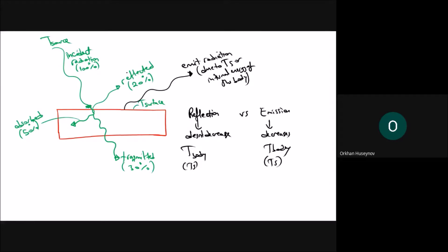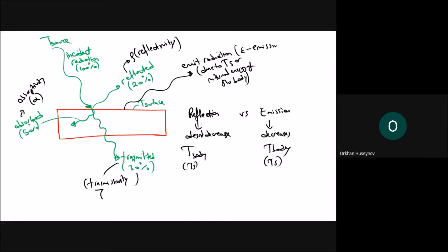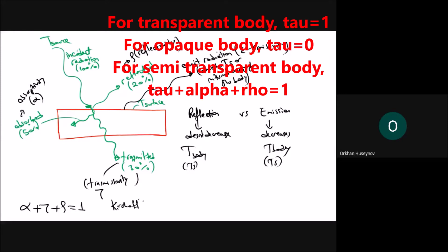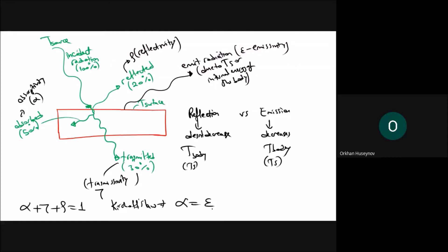For reflectivity we use the symbol rho, for transmissivity we use tau, and for absorptivity we use alpha. The emissivity is denoted epsilon. The relation is: alpha plus tau plus rho equals one. Kirchhoff's law states that at a given wavelength lambda and temperature, alpha equals epsilon.